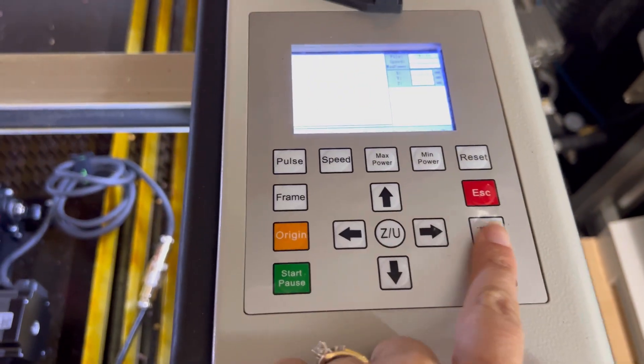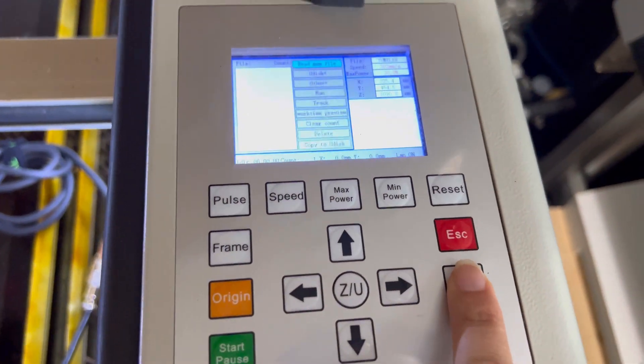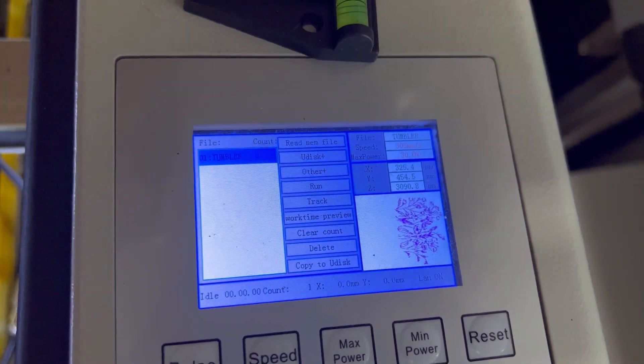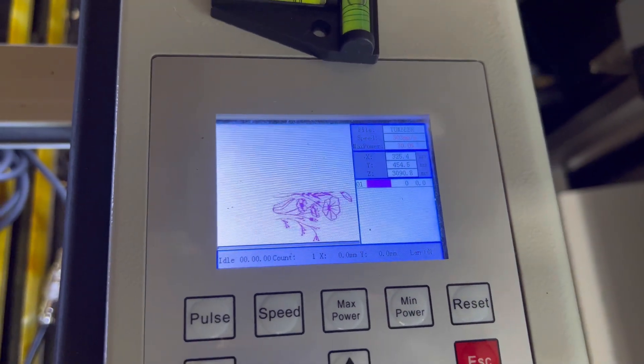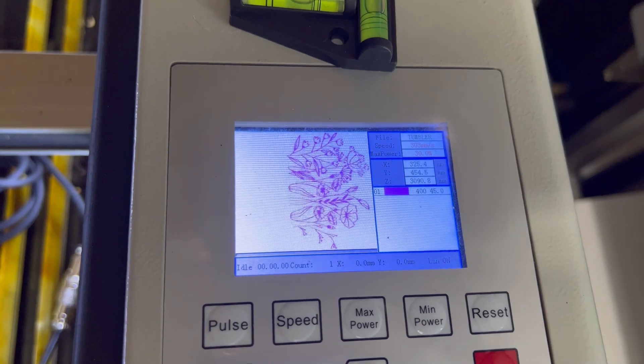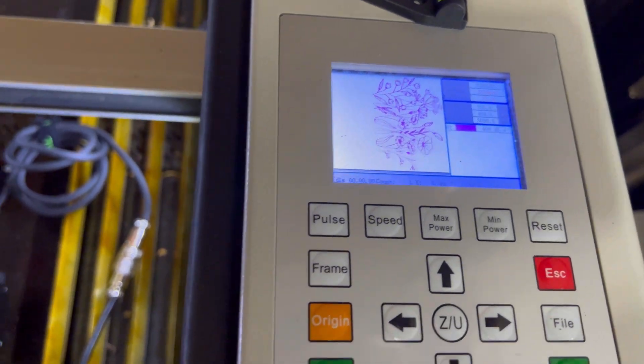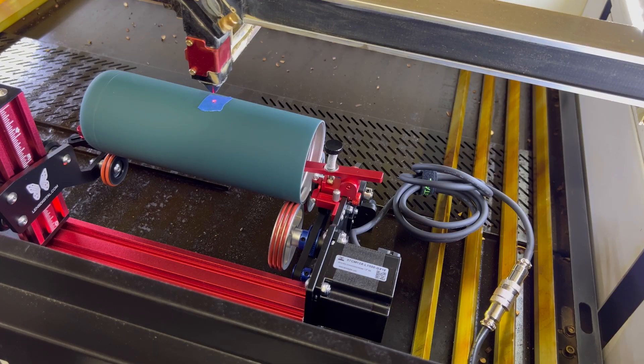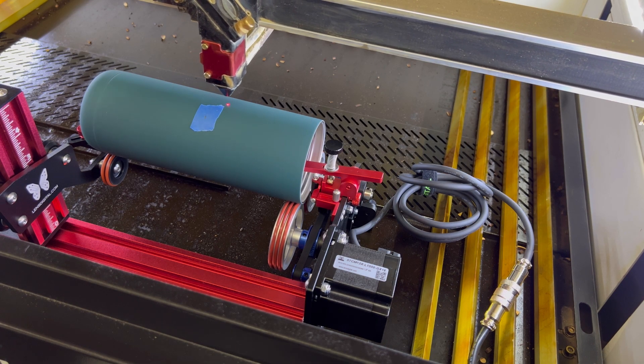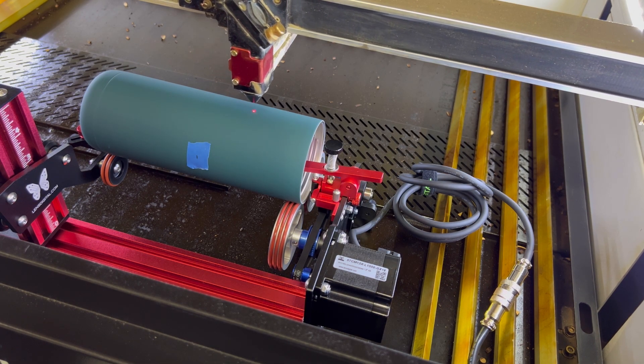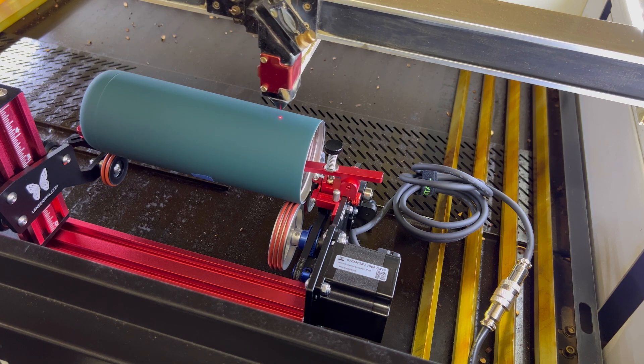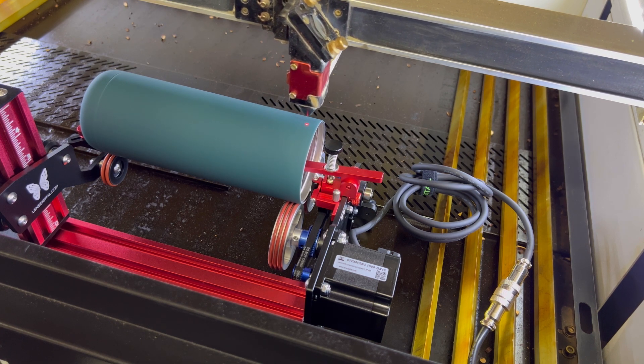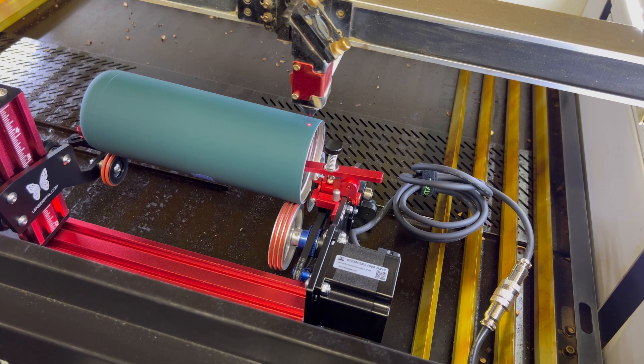On the machine, we're going to select File and then we'll be able to see our file at the top. Click Enter and you can see the design there. Now once it is on there, we should be able to go to Frame and watch it frame in our design, making sure that the design is within the engraveable part of our tumbler.